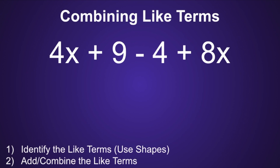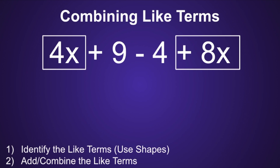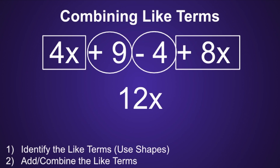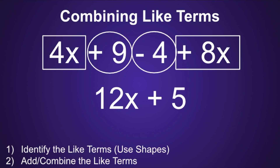Now we're going to look at a few examples. There are two steps when combining like terms. Step 1 is to identify the like terms. I like to put shapes around these so I can determine the like terms right away. And Step 2 is to add or combine the like terms. So in the expression 4x plus 9 minus 4 plus 8x, the like terms would be 4x and a positive 8x, and positive 9 and negative 4. Moving on to Step 2: 4x plus 8x is equal to 12x, and a positive 9 plus a negative 4 is equal to positive 5. So our simplified expression would be 12x plus 5.